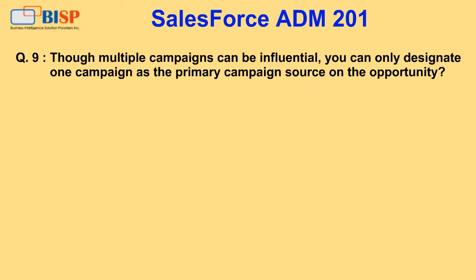Question 9. Though multiple campaigns can be influential, you can only designate one campaign as the primary campaign source on the opportunity. A. True. B. False.